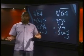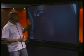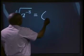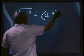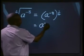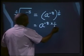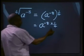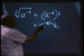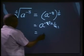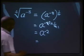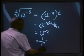Now let's try one with negative exponents. Can you simplify the 4th root of a to the power of minus 8? This will be equal to a to the power of minus 8, all to the power of 1 over 4. This will be the same as a to the power of minus 8 multiplied by 1 over 4. We know 4 goes into 8 twice, giving us a to the power of minus 2. This can be written as a positive exponent: 1 over a to the power of 2.